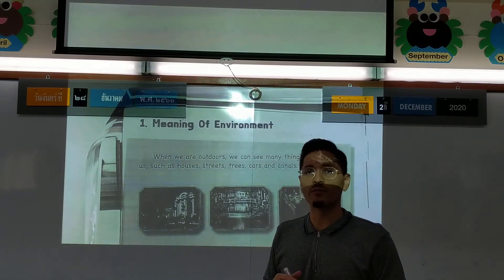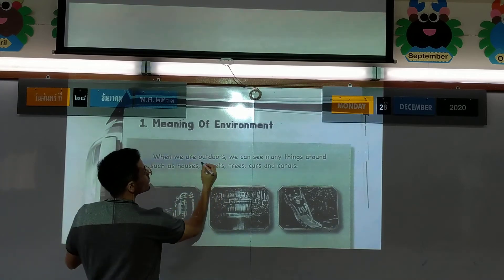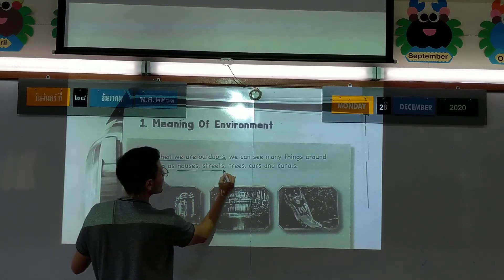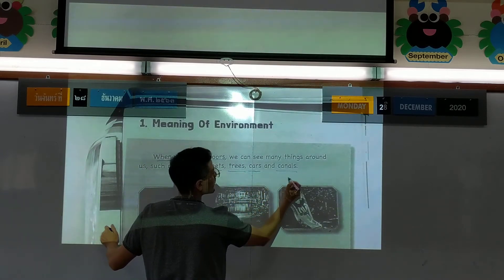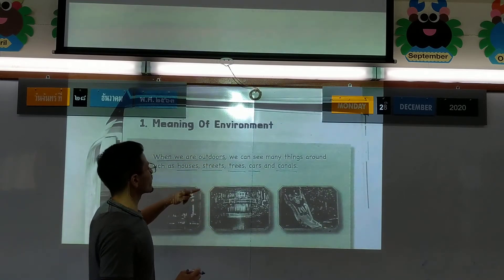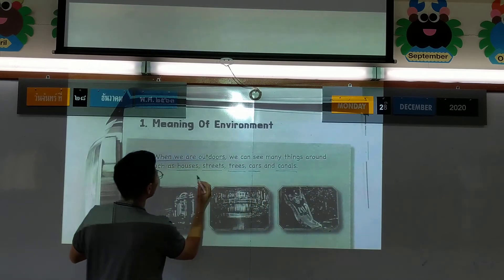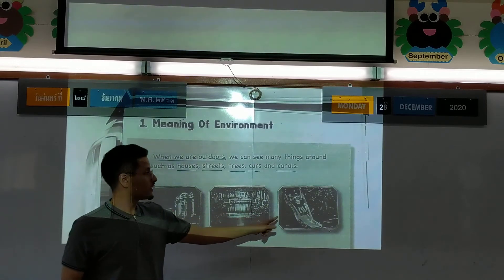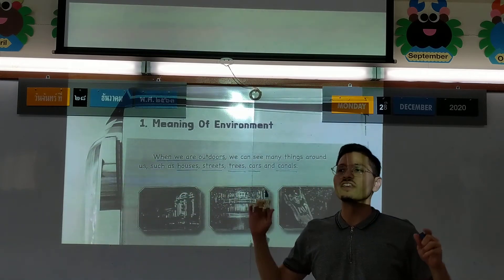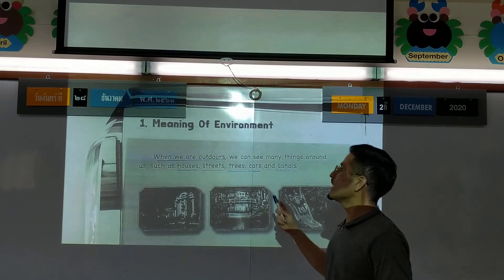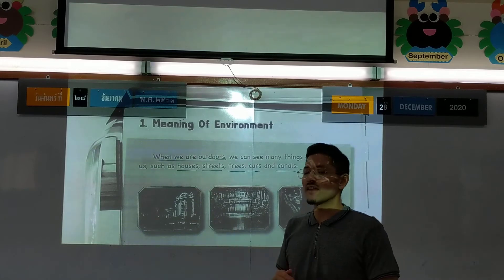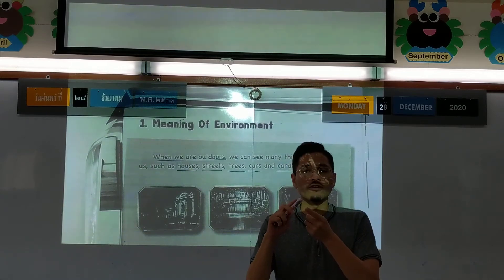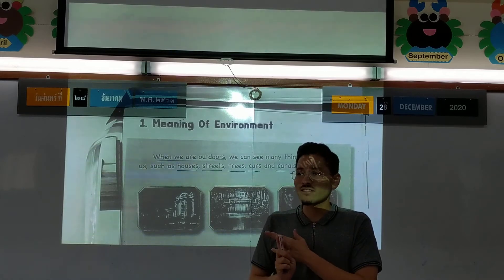When we're outside, these are all part of the environment. When we are outdoors we can see many things: houses, streets, trees, cars, and canals. You can see pictures - this is all part of the environment around us. The environment is the things you see, the things you touch, and the people that are there. You go to school - your environment is the students, the teachers, the desk, the paper.